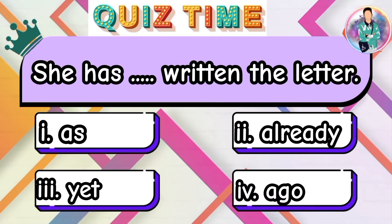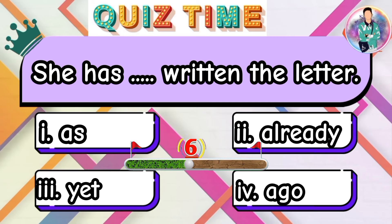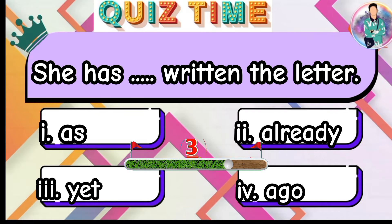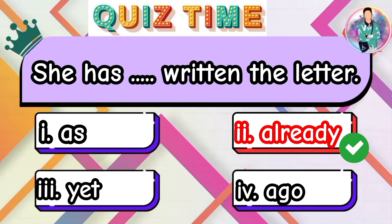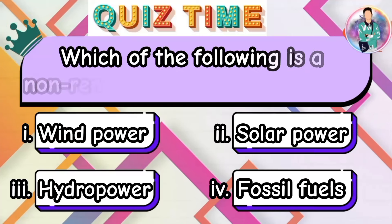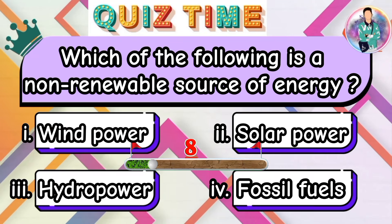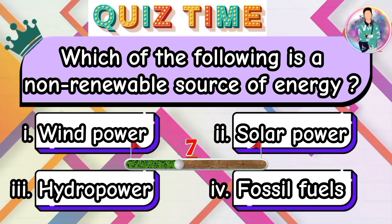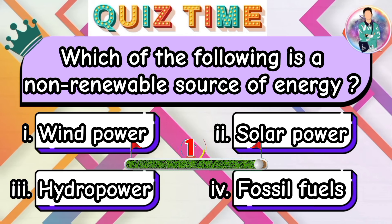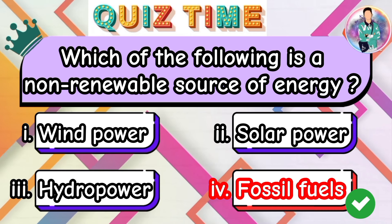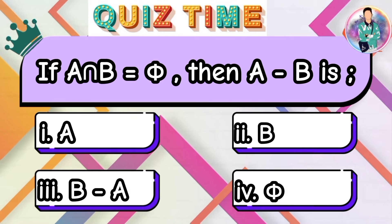She has written the letter. Which of the following is a non-renewable source of energy? If A intersection B is phi, then A minus B is?